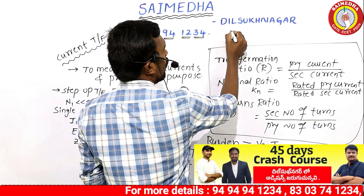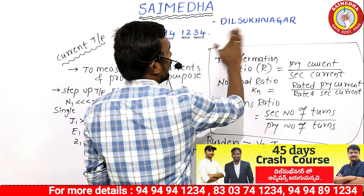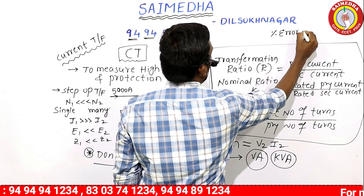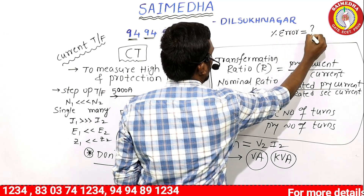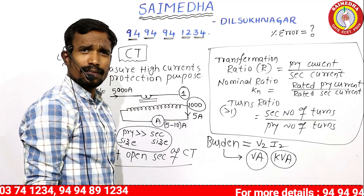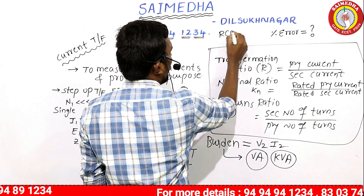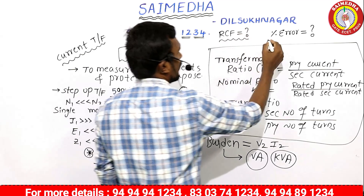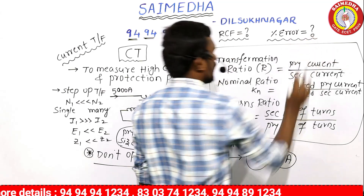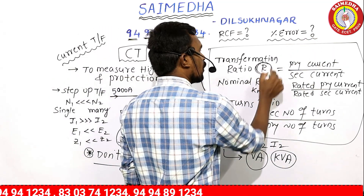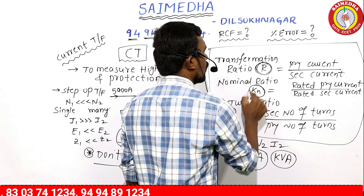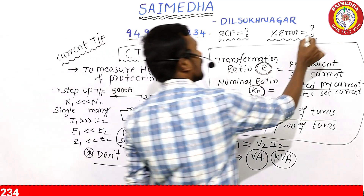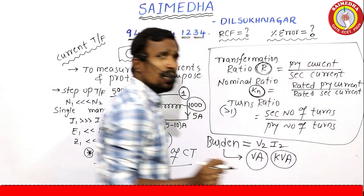For homework: the percentage error formula for CT and PT, and the ratio correction factor formula. We will look at the transformation ratio and the nominal ratio, and find the ratio correction factor and percentage error.